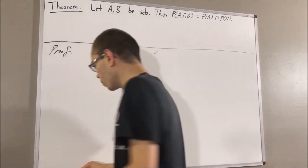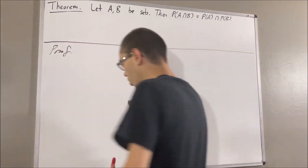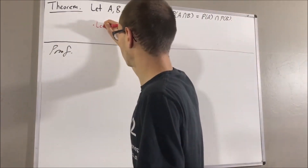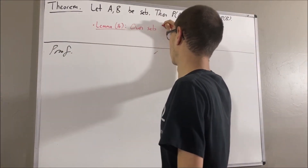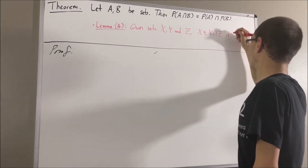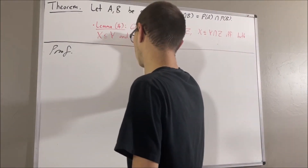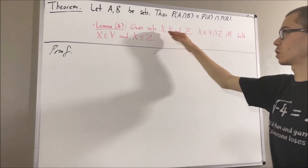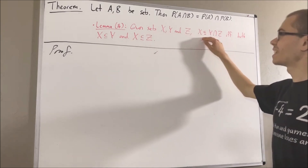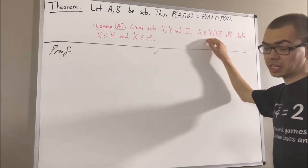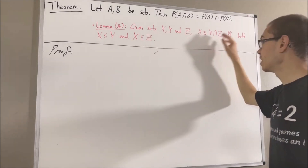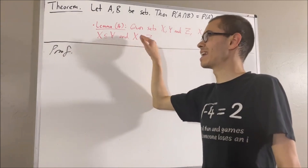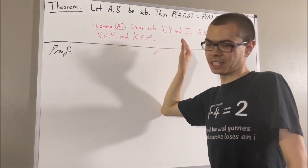Now, in proving this theorem, we are going to rely on the following lemma. Given any three sets X, Y, and Z, X is a subset of the intersection of Y and Z if and only if both X is a subset of Y and X is a subset of Z.